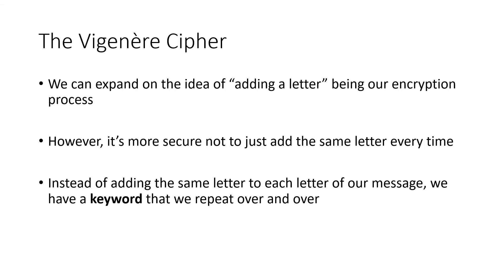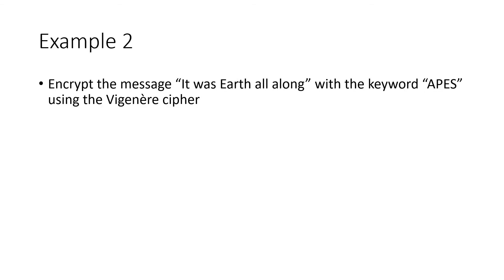As we've seen before, the Caesar cipher is not a great cipher because it's a substitution cipher, which means it's vulnerable to frequency analysis. We can expand on the idea to make a better cipher by instead of adding the same letter every time, we add a repeating keyword. For example, I can encrypt the message 'it was earth all along' with the keyword 'apes' using this cipher.